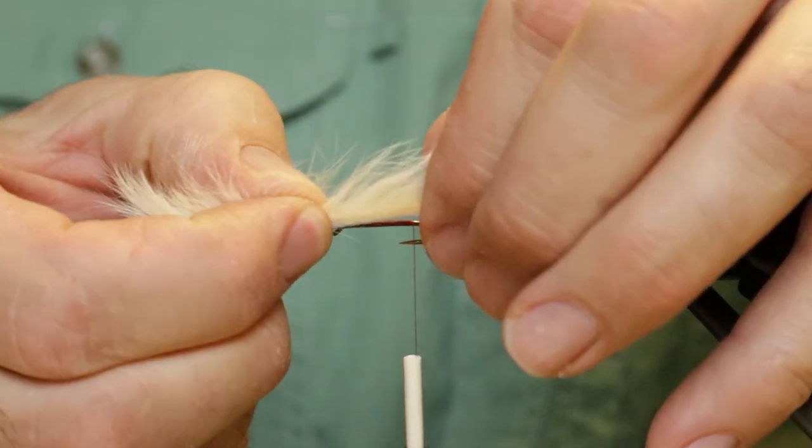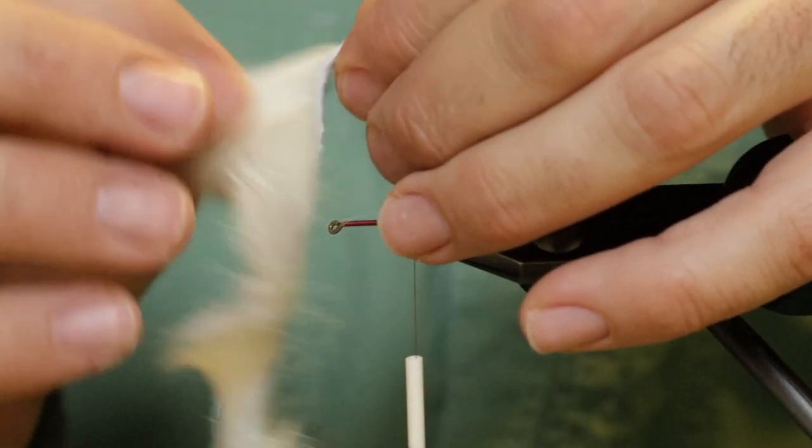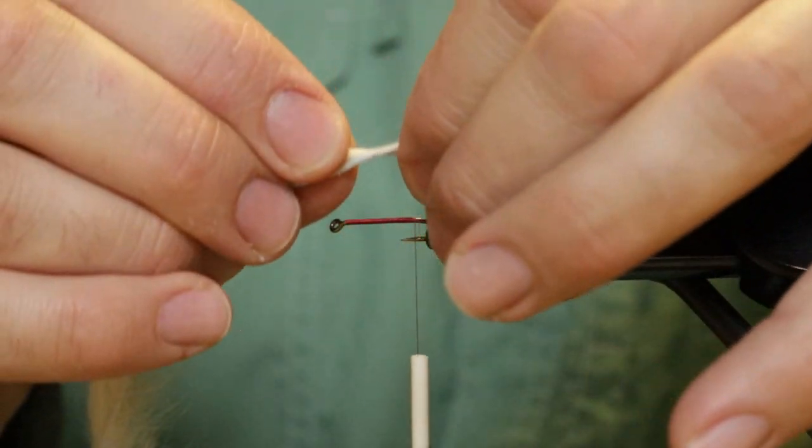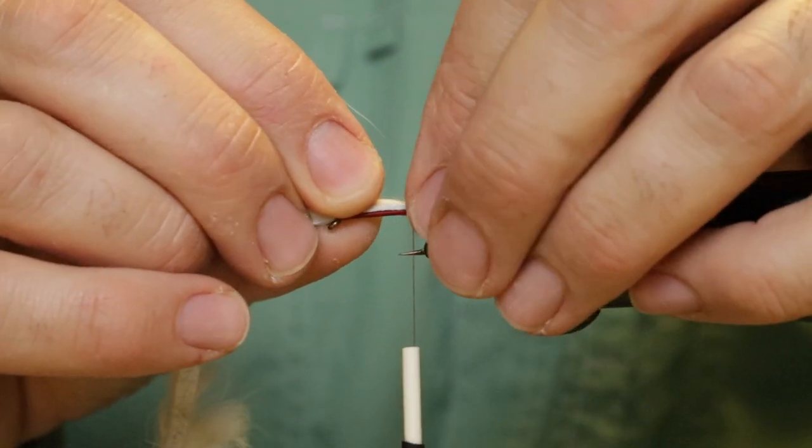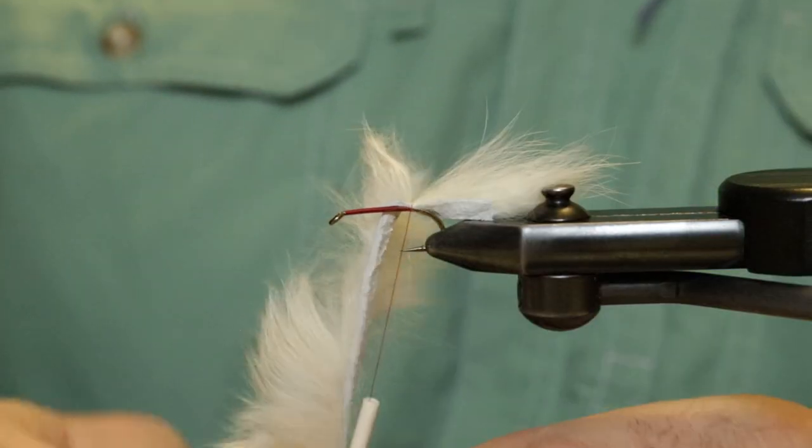I'm going to measure that out and pull back the fibers, the hairs. We'll tie that directly on the top of the back here as our tail.